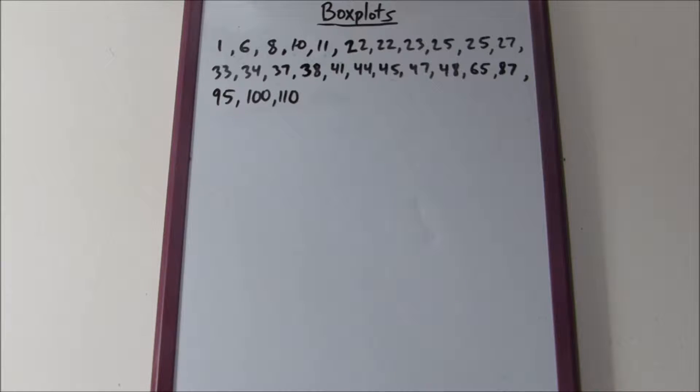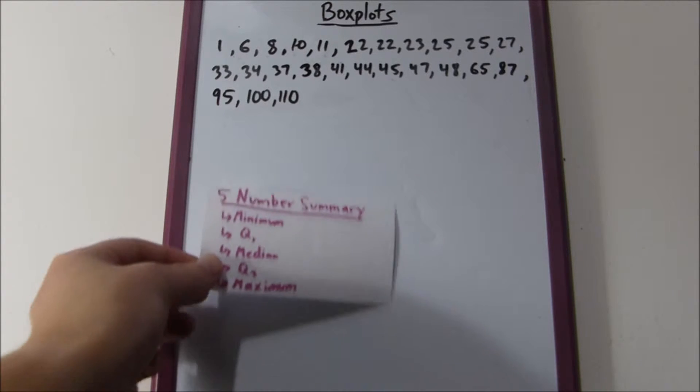All right, so today we're going to be talking about box plots. Box plots are a good way to summarize data sets because they provide more information than just a measure of center and spread, but less detail than a stem and leaf display or a histogram. They provide information about the center, the spread, the symmetry, or the skewness of the data, and they're not based on the mean and standard deviation. They're actually based on the median and inner quartile range, which we can find using the five-number summary.